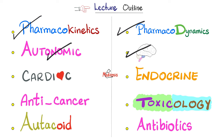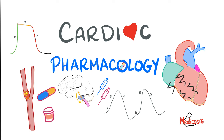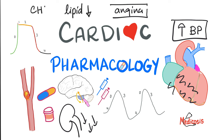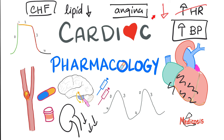Introduction to cardiac pharmacology. Sometimes the heart has arrhythmia — so we have anti-arrhythmics. Sometimes you have hypertension — so we have medications to lower blood pressure, including diuretics that tell the kidney to pee more to lose fluid and lower blood pressure. Sometimes there is angina — chest pain — so we have anti-anginal medications. Sometimes there is hyperlipidemia and hypercholesterolemia — so we have lipid-lowering agents. Sometimes the heart muscle is weak and there is congestive heart failure — we give medications to boost cardiac contractility, called positive inotropes. And if the heart rate is high — negative chronotropes lower it.